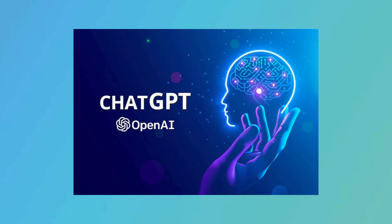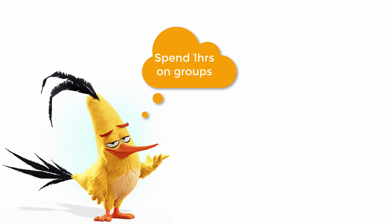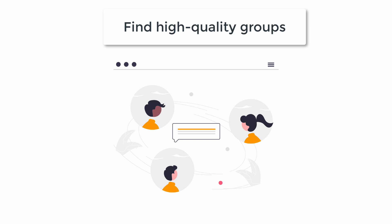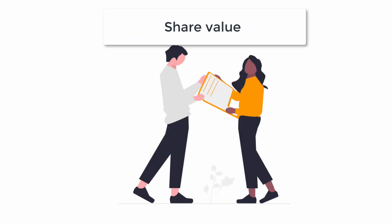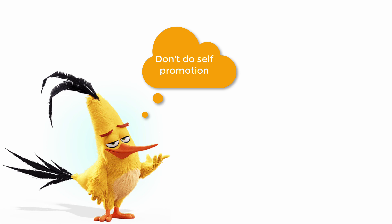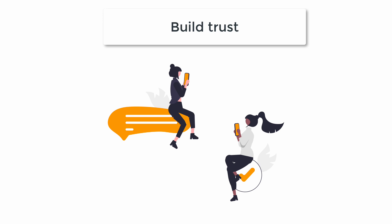Don't just use ChatGPT with generic keywords. The third way to get clients is to spend one hour on Facebook groups and LinkedIn groups. Find high quality and engaging groups related to your coaching business, then join and share valuable content and engage with other people. Don't share links or promote your coaching business directly — just share value and give advice. The key is to build trust on those groups.